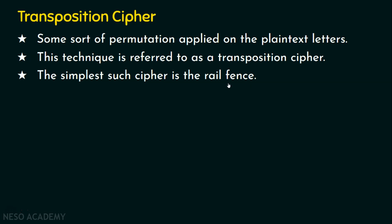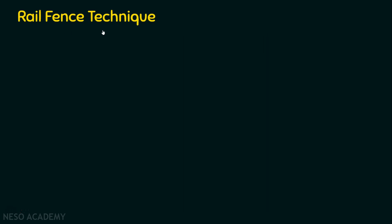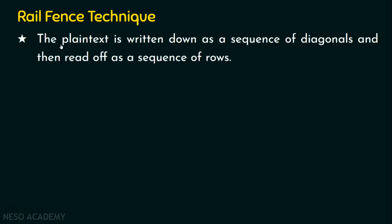Rail fence is a transposition technique where the plaintext letters are not going to be replaced or substituted by other letters. Rather, the position of the plaintext letters are going to be changed. How is it changed in rail fence? The plaintext letters are written down as a sequence of diagonals and then read off as a sequence of rows. Just watch the cursor — we are going to write like this diagonally and then read row by row so that the position of the plaintext letters are changed. When we see an example, it will be easy to understand.